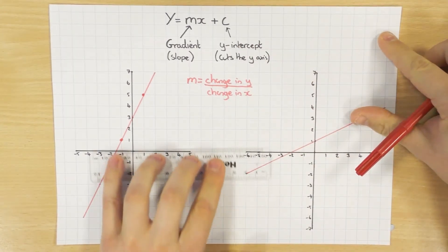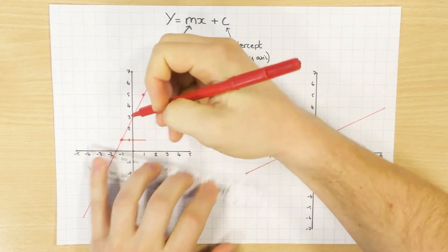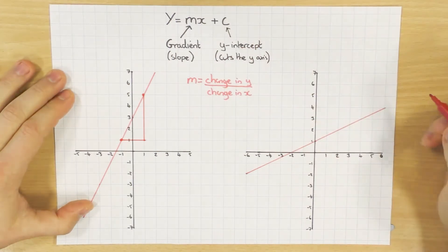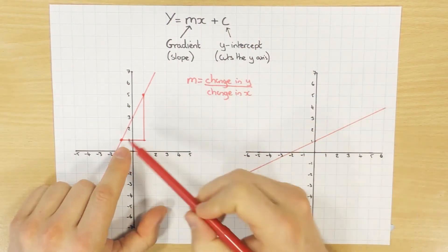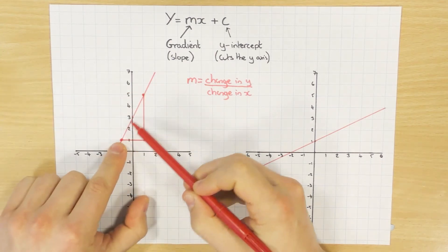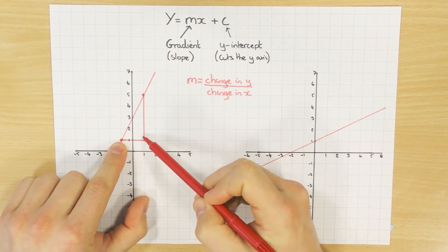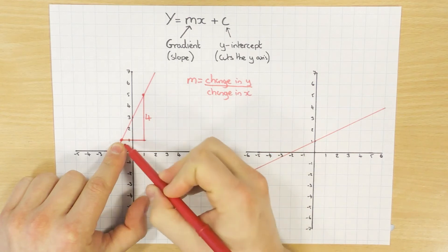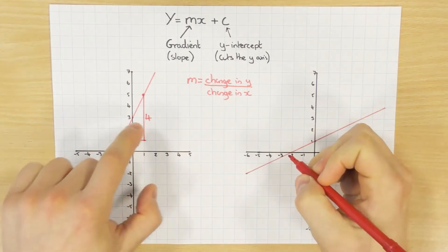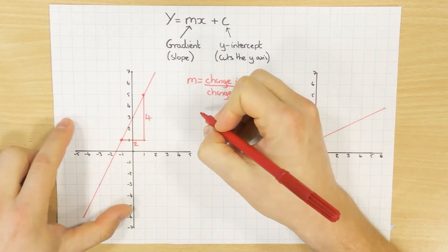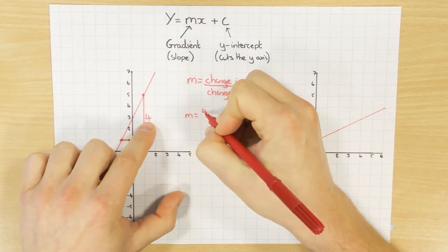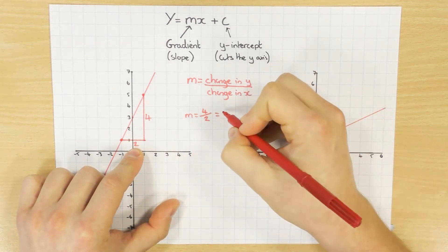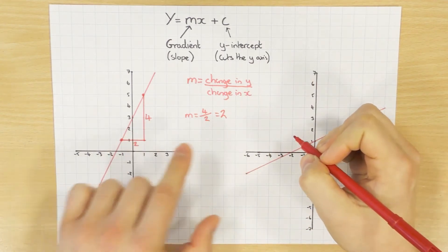And then all I'm going to do is have a look at the change in y. So we always go left to right. So from this coordinate to this coordinate, what's the change in y? Well, it goes 1, 2, 3, 4 up. And what's the change in x? Well, from this one to this one, I go across 2. Then all I do is put those values into this formula. So for this one here, m equals 4, which is the change in y, divided by the change in x. Obviously simplify it. So 4 divided by 2 is obviously going to give me 2. So the gradient of this line is 2.